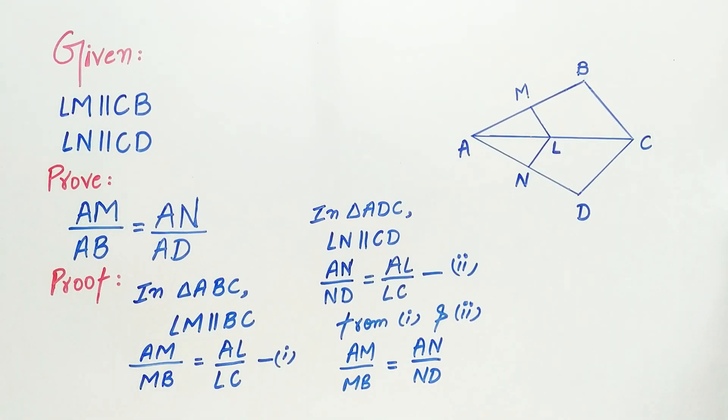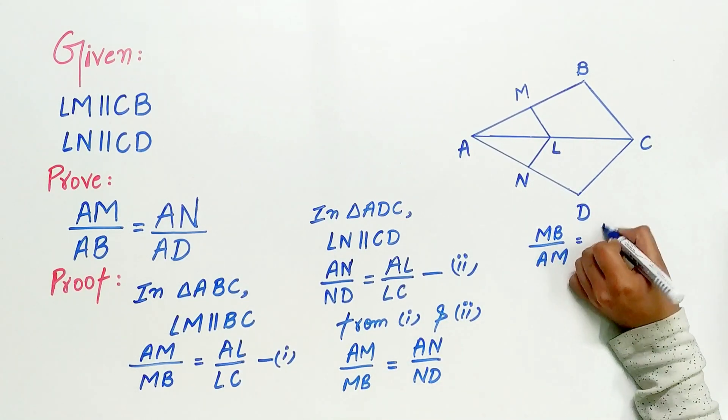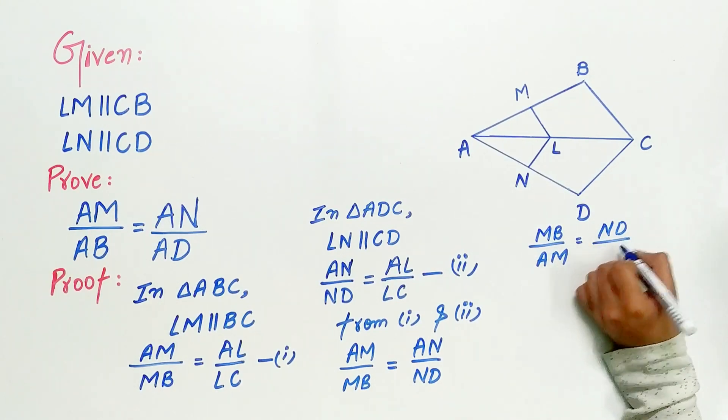Now, next step is to reciprocal the entire equations. You may be wondering why. Hold on for a while and you'll get to know. MB by AM is equal to ND by AN.